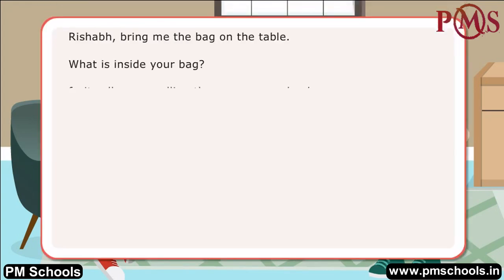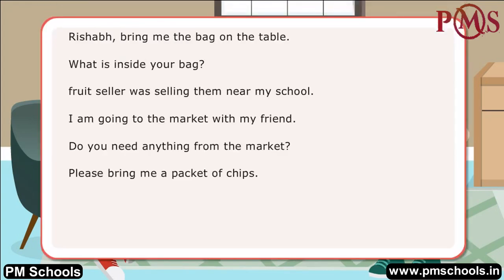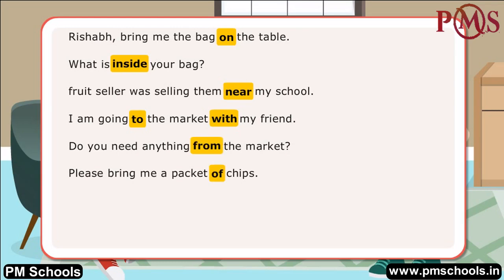In the dialogues, the boy and the girl have used words that tell us about the position of the noun or pronoun in front of which they are placed, with another word in the sentence. The words on, inside, near, to, with, from, of are examples of prepositions.